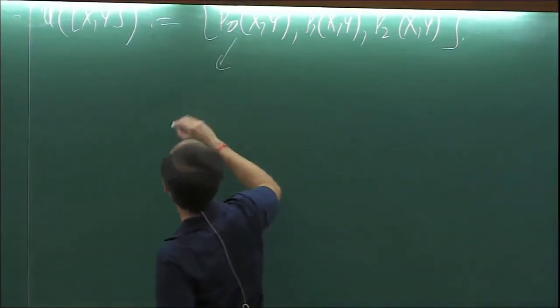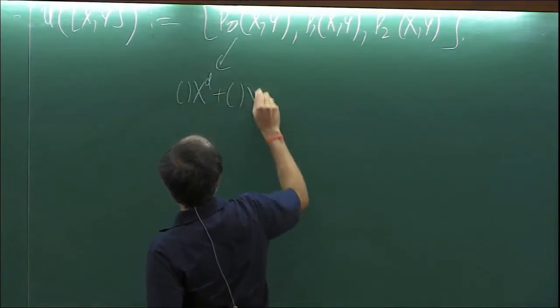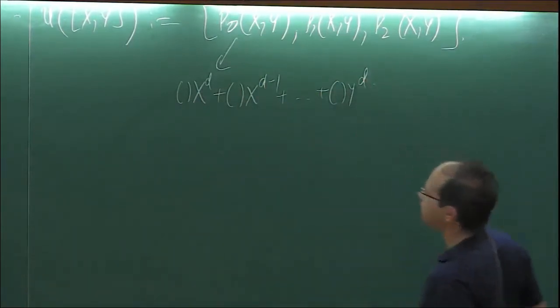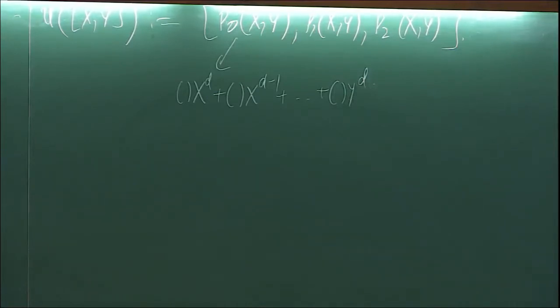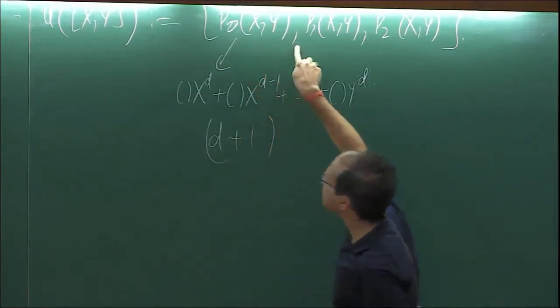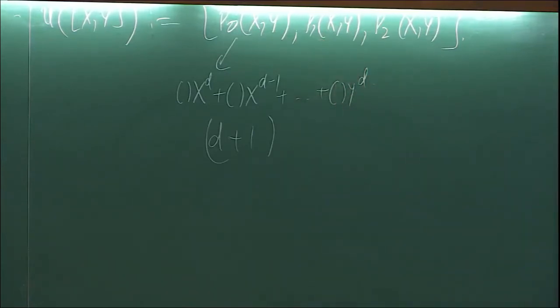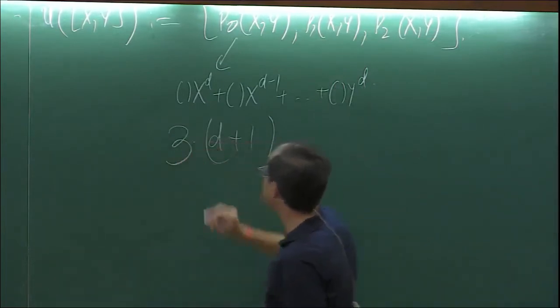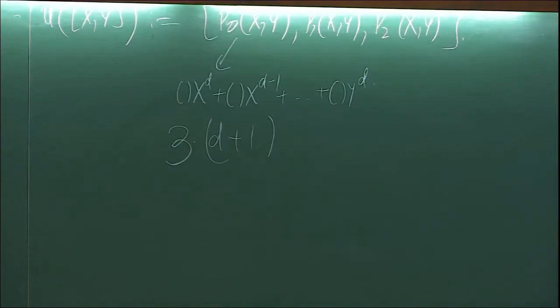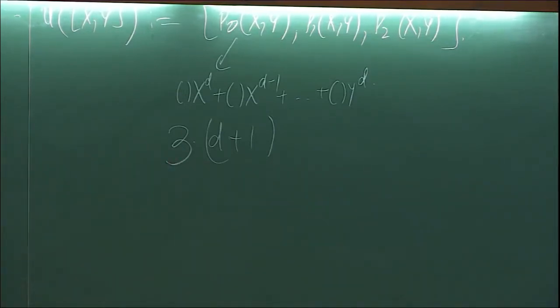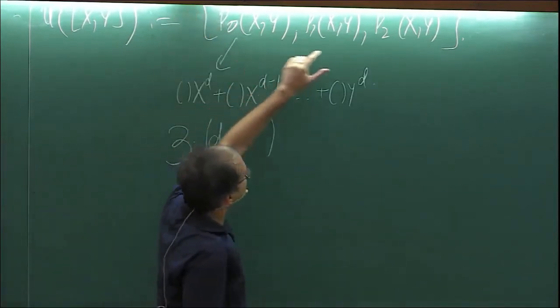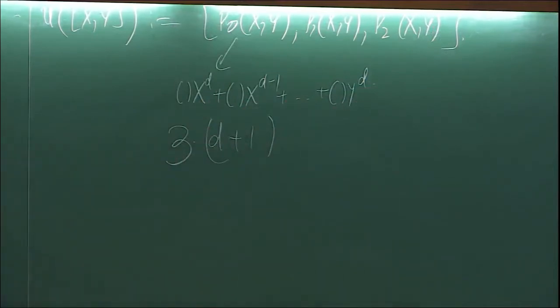How many degrees of freedom do I have? I have D plus 1 degrees of freedom in the first slot, similarly D plus 1 in the second, and D plus 1 in the third — so naively 3 times (D plus 1) degrees of freedom. But since the target is CP2 not C3, that reduces the dimension by one. Then I am modding out by the group of automorphisms of P1, which is Möbius transformations az+b over cz+d. Although it looks like 4 degrees of freedom, scaling them gives the same automorphism, so this is a complex 3-dimensional group — reducing dimension further by three.